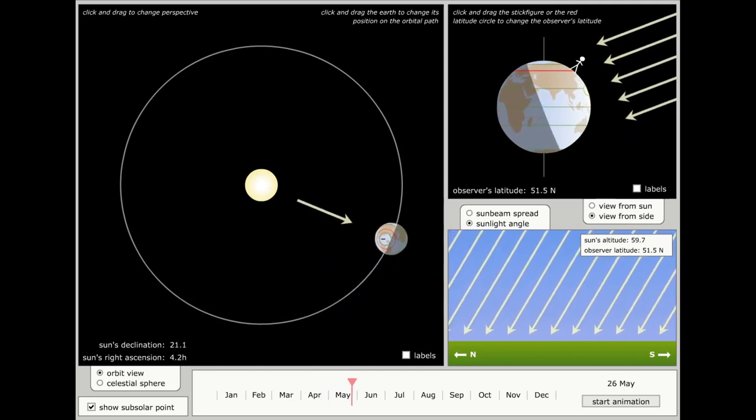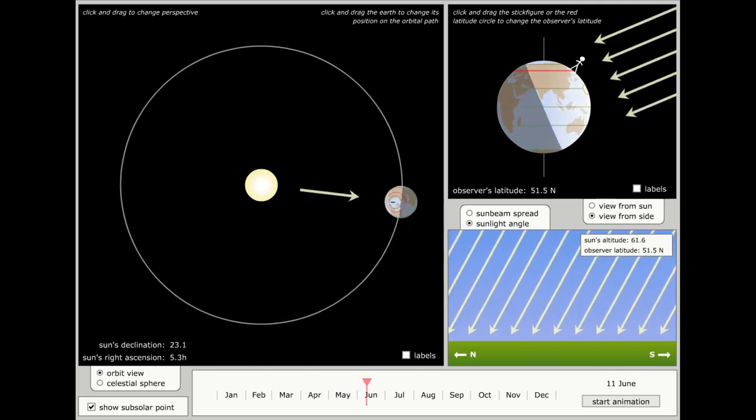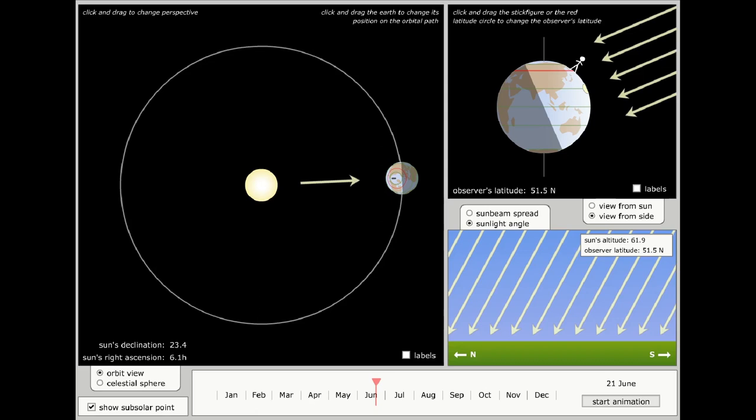Now, at the end of June, the sun is directly above the 23rd parallel north. At our latitude, the sun is high up in the sky and the rays of sunlight are at their largest angle to the surface. So each square meter receives a large amount of energy. That's why in summer it's, well, summer.